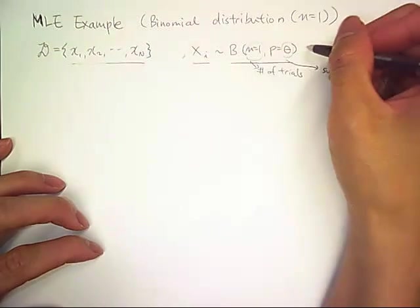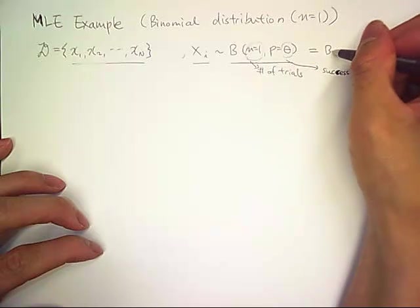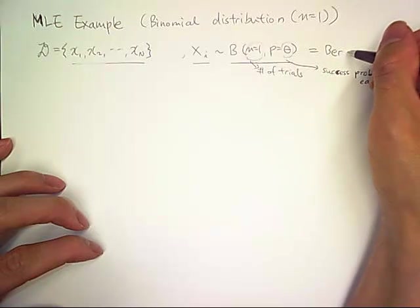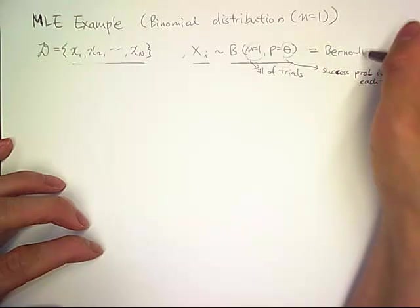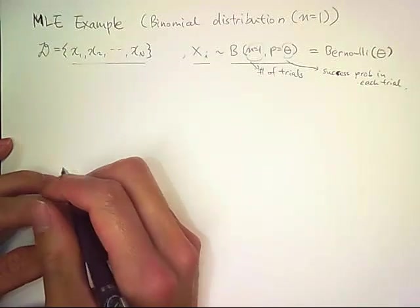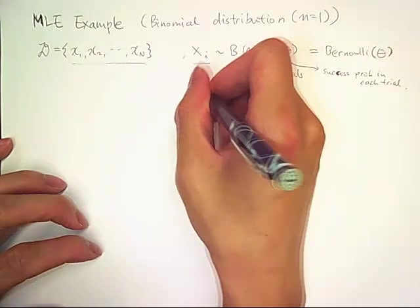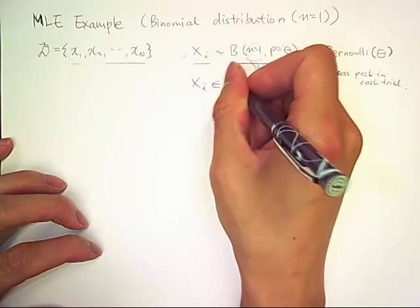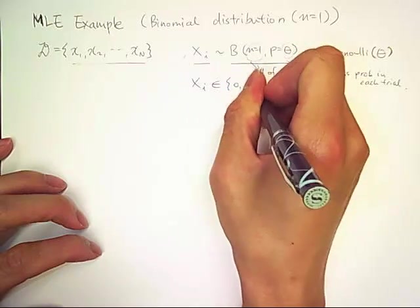Since n equals 1, this is essentially the same as Bernoulli distribution with success probability theta. And x sub i is either 0 or 1 in this case.